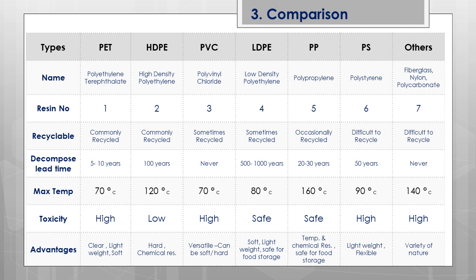One interesting piece of information is the decompose lead time: PET takes 5 to 10 years, HDPE takes 100 years, PVC has no limit, LDPE takes 500 to 1000 years. The majority of polythene bags are made of LDPE — that is why different countries and governments are restricting the use of polythene bags, because the decomposing time is very high and it pollutes the environment. PP takes 20 to 30 years and PS takes 50 years; other plastics similarly have very long or infinite decompose times.